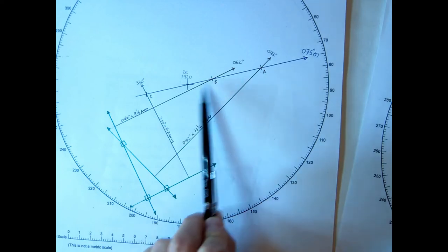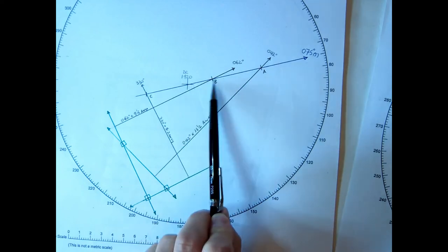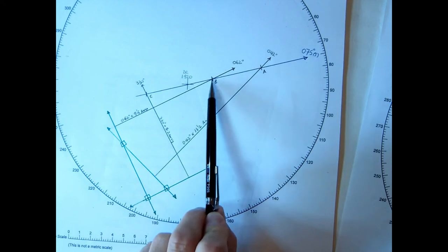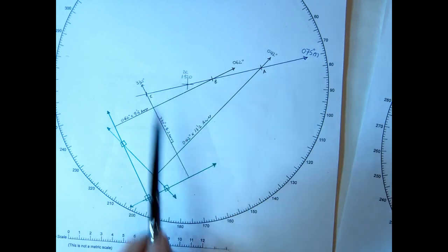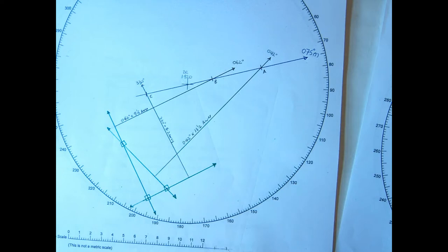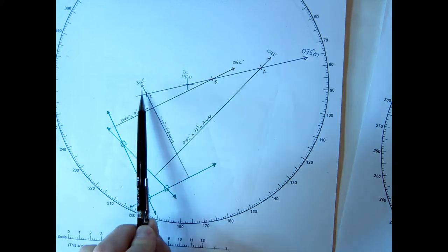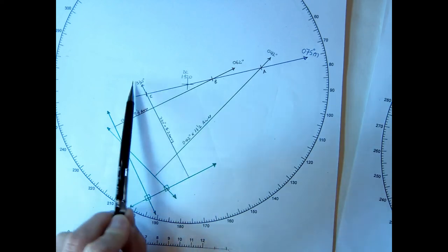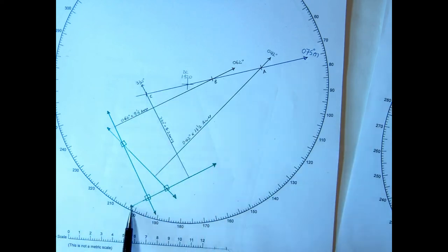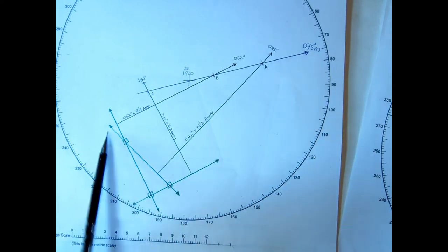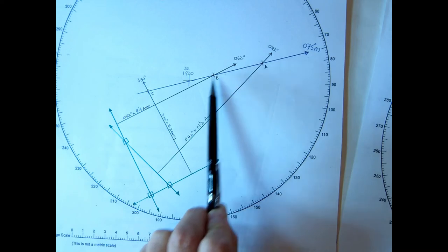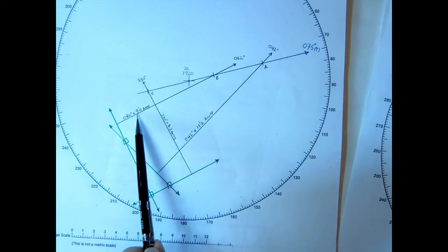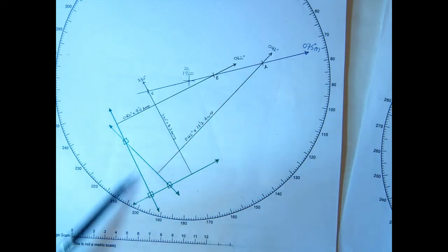Stars A and B are after the DR by their respective position distances, and star C is plotted before. We can see star C is 330 at 8.2 away, A is 042 at 13.2 away, and B is 062 at 9.5 away. So there we have the cocked hat.